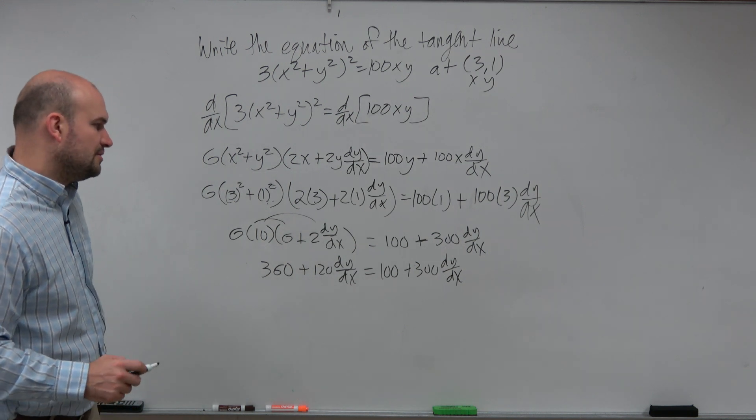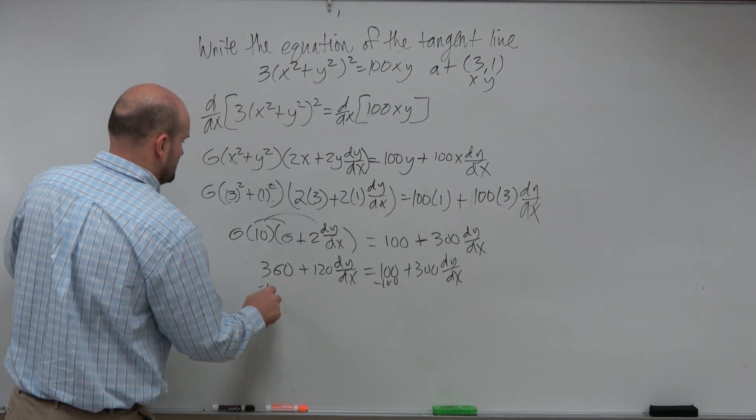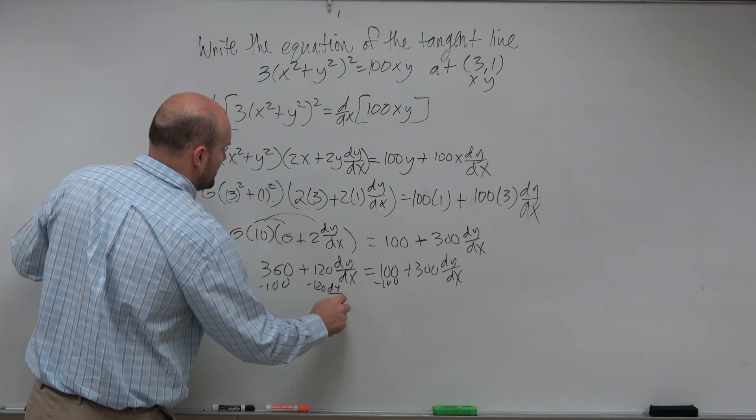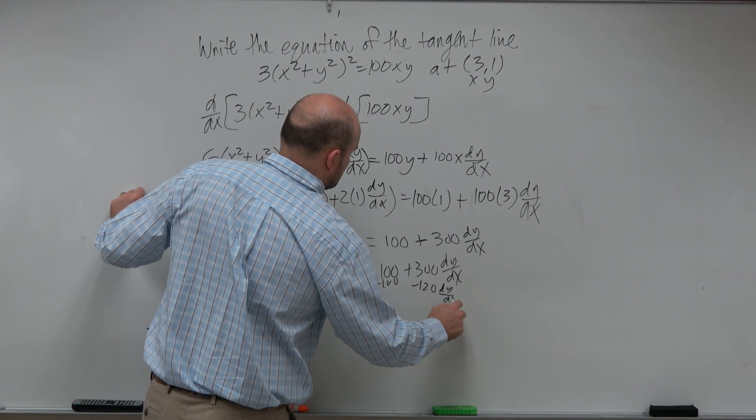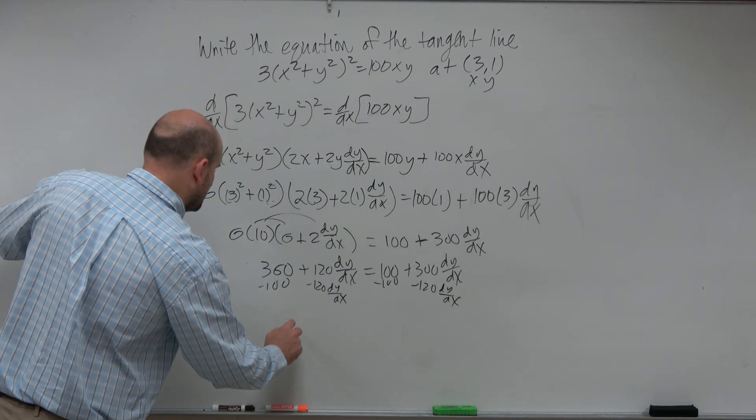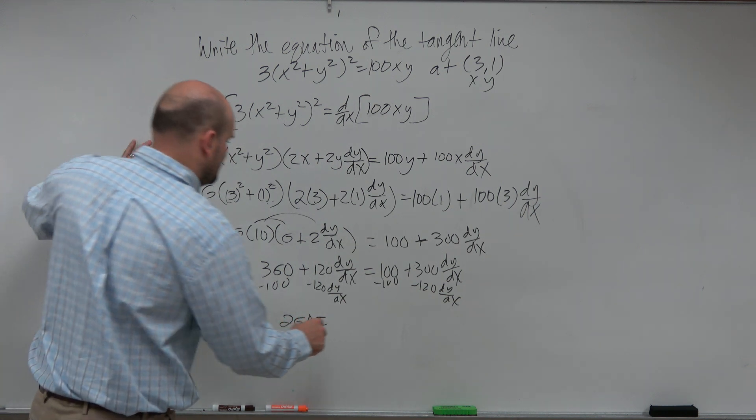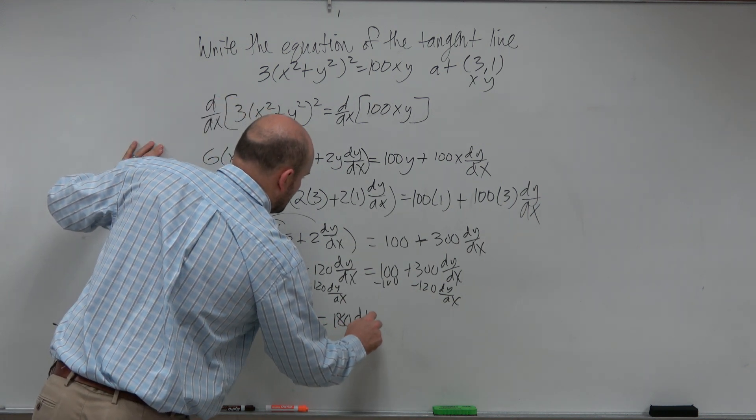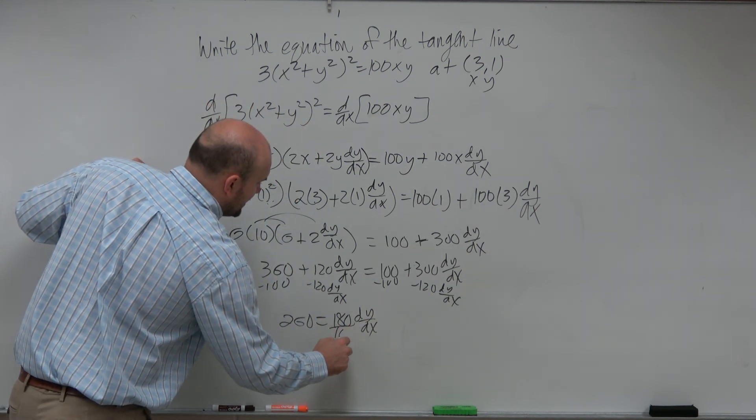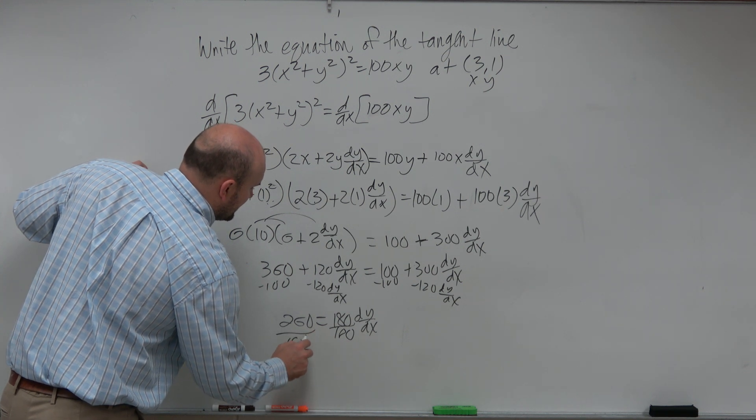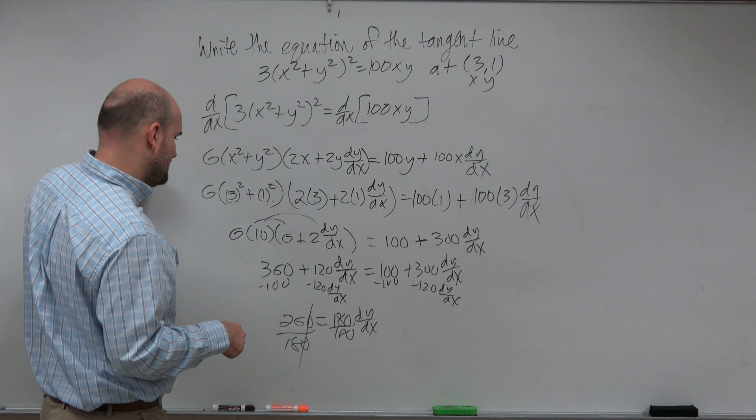And then now we can just go ahead and solve and get them to the same side. So I'll subtract 100 on both sides, and I'll subtract 120 dy/dx on both sides. So therefore, this becomes 260 equals 180 dy/dx, divide by 180, divide by 180.